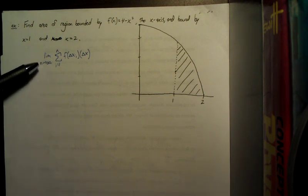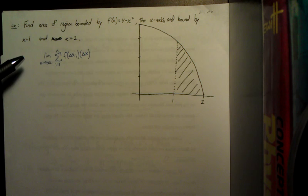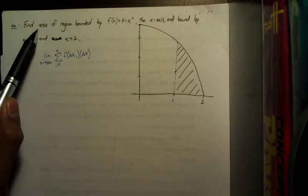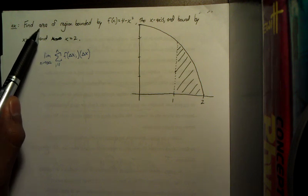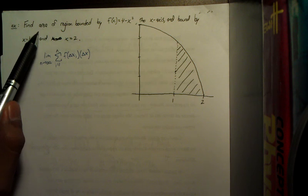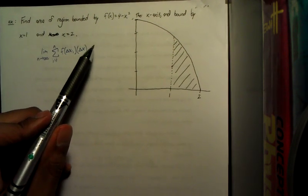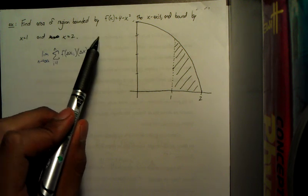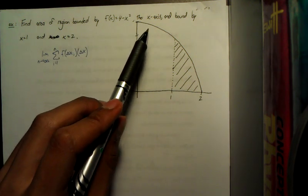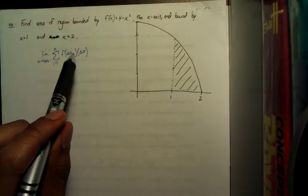So here's our general formula we're going to be using. If you can recall from the last video, I distinguished between the area and the integral. As you can see in this one, it says find the area of the region bounded by f(x), the x-axis, and bound by x equals 1 and x equals 2.